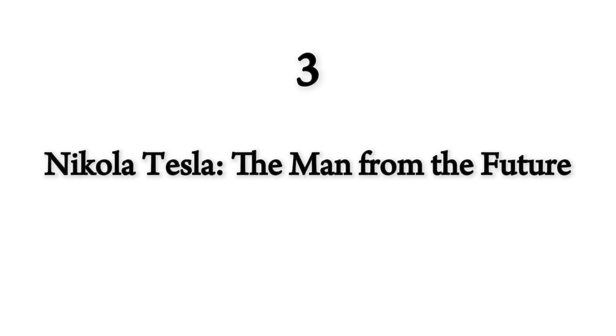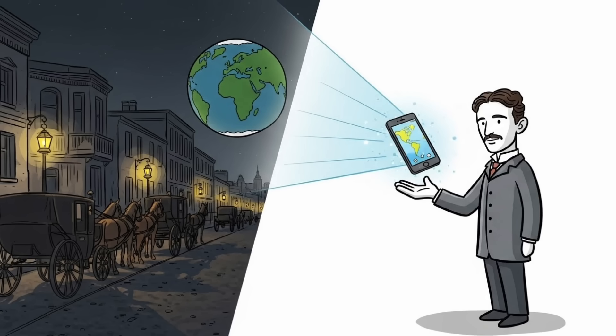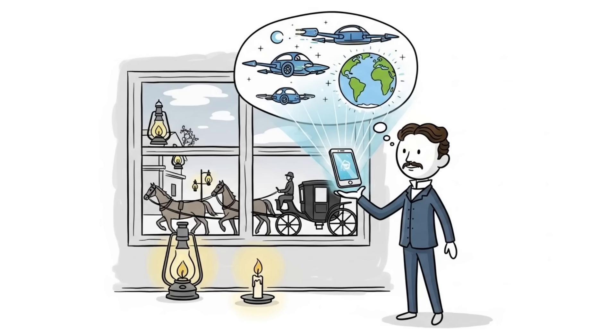3. Nikola Tesla, the man from the future. Tesla talked about worldwide wireless systems and pocket-sized devices that could send pictures across the planet in the 1890s when most homes didn't even have light bulbs.